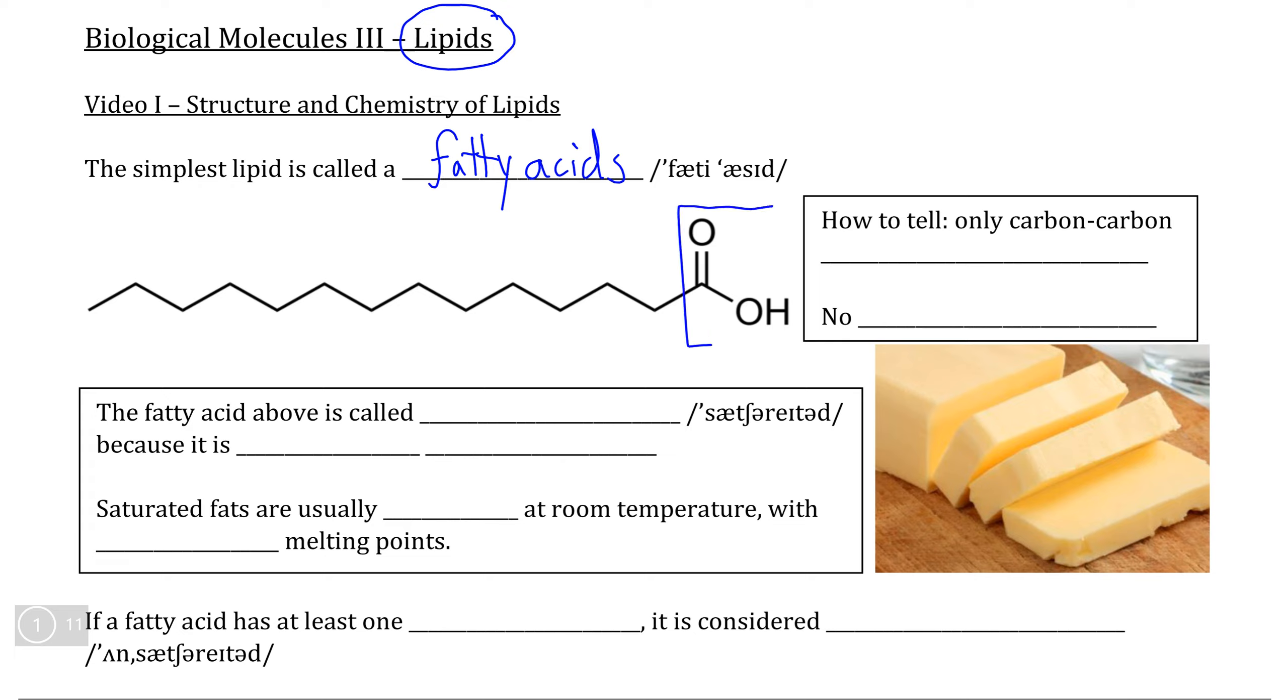We can recognize a fatty acid by the presence of an acid functional group as shown by the COOH found on one end of the molecule, followed by a very large chain of just hydrogen and carbon atoms.